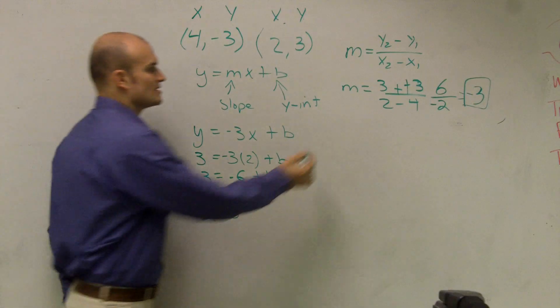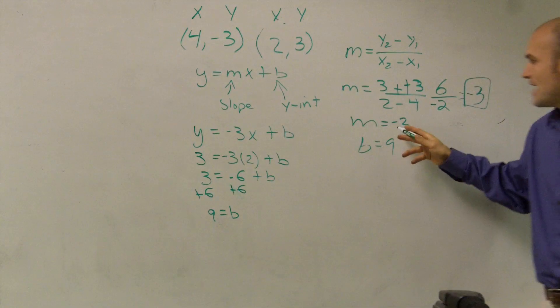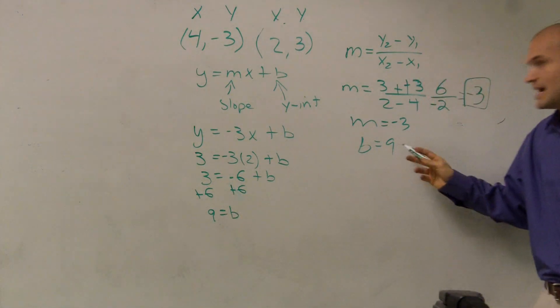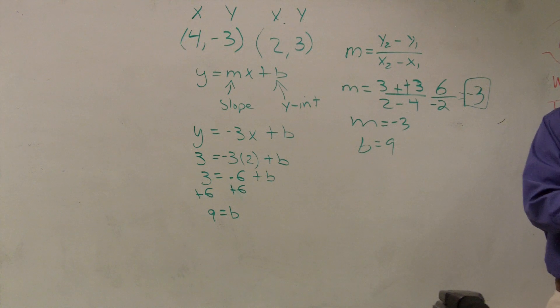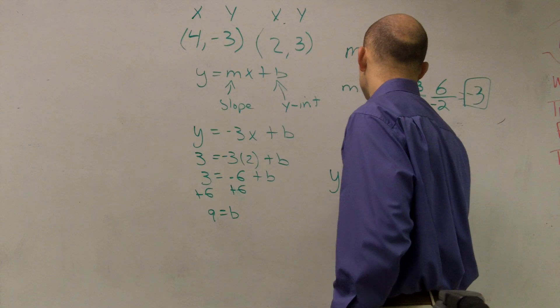So if you notice, I've now found m equals negative 3 and b equals 9. Since I know both values, I can write my equation in slope-intercept form.